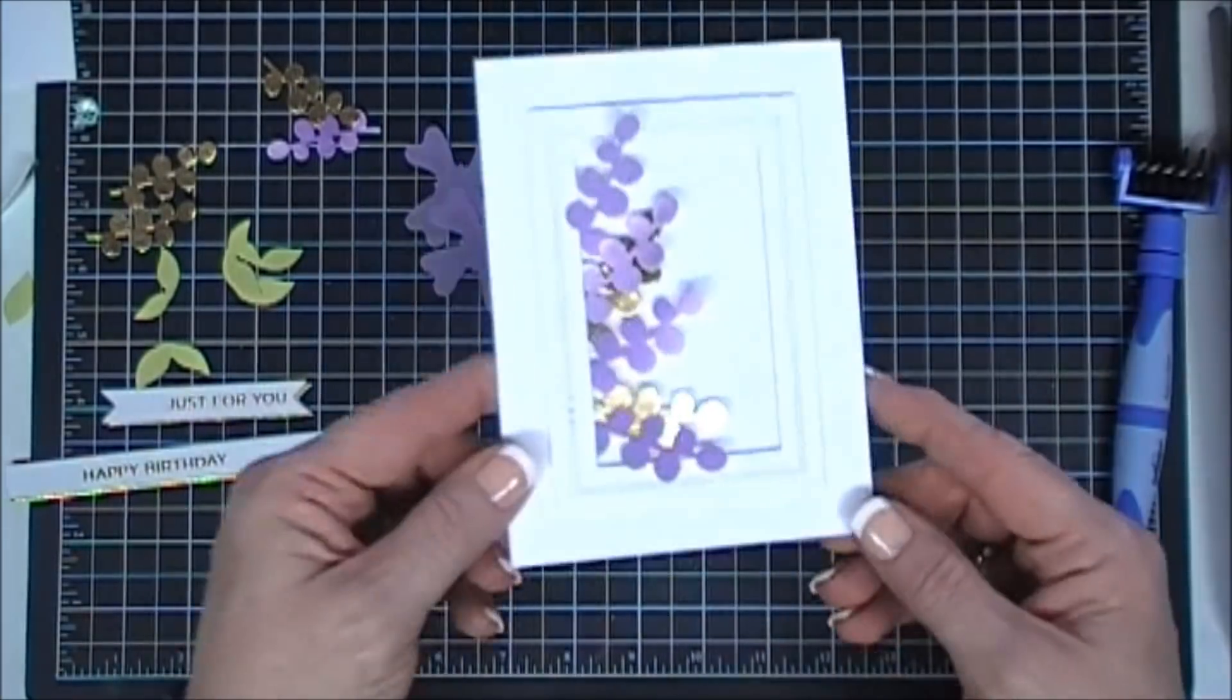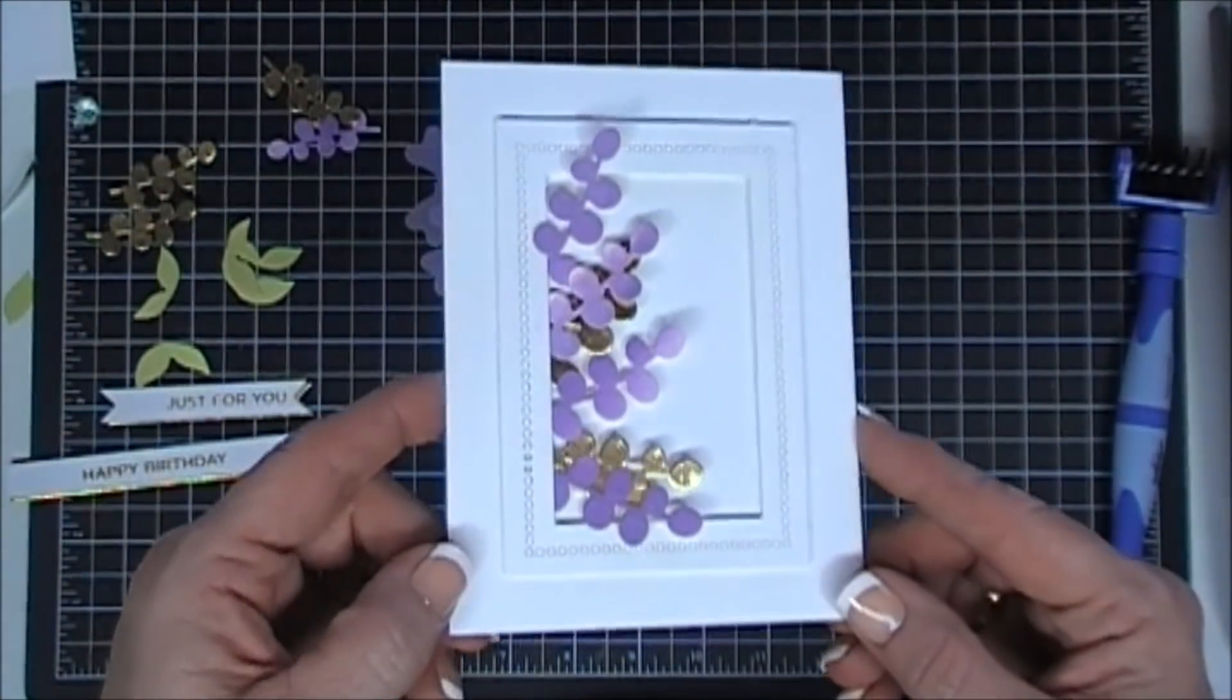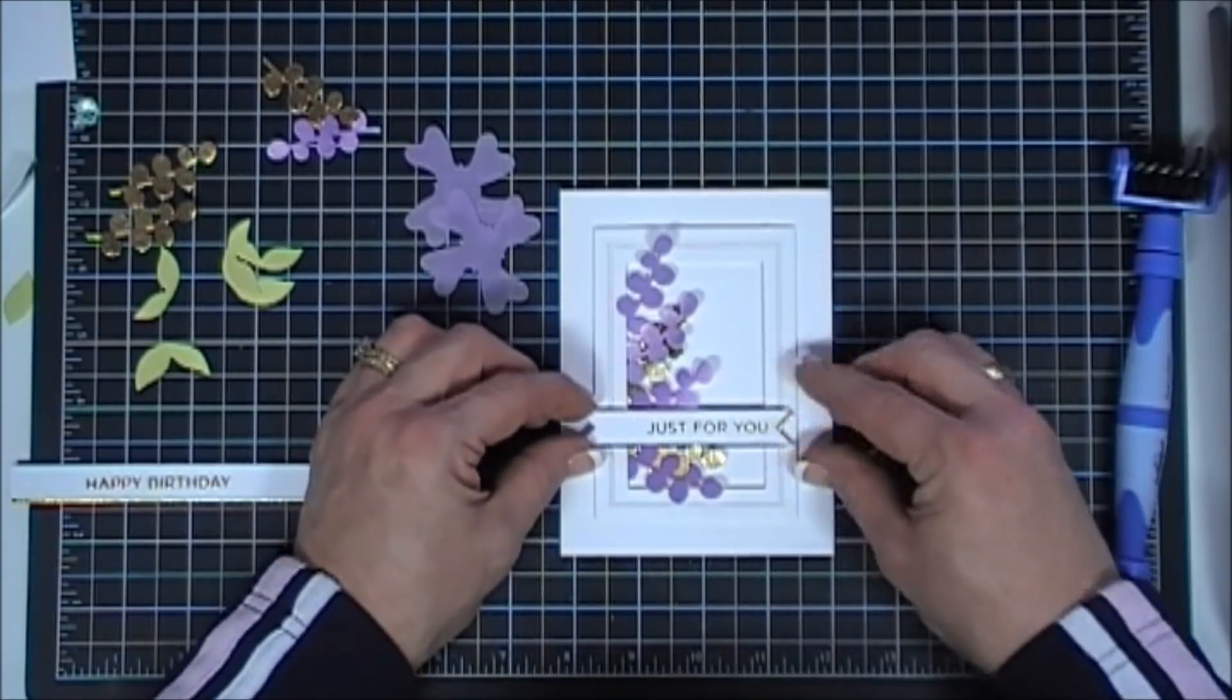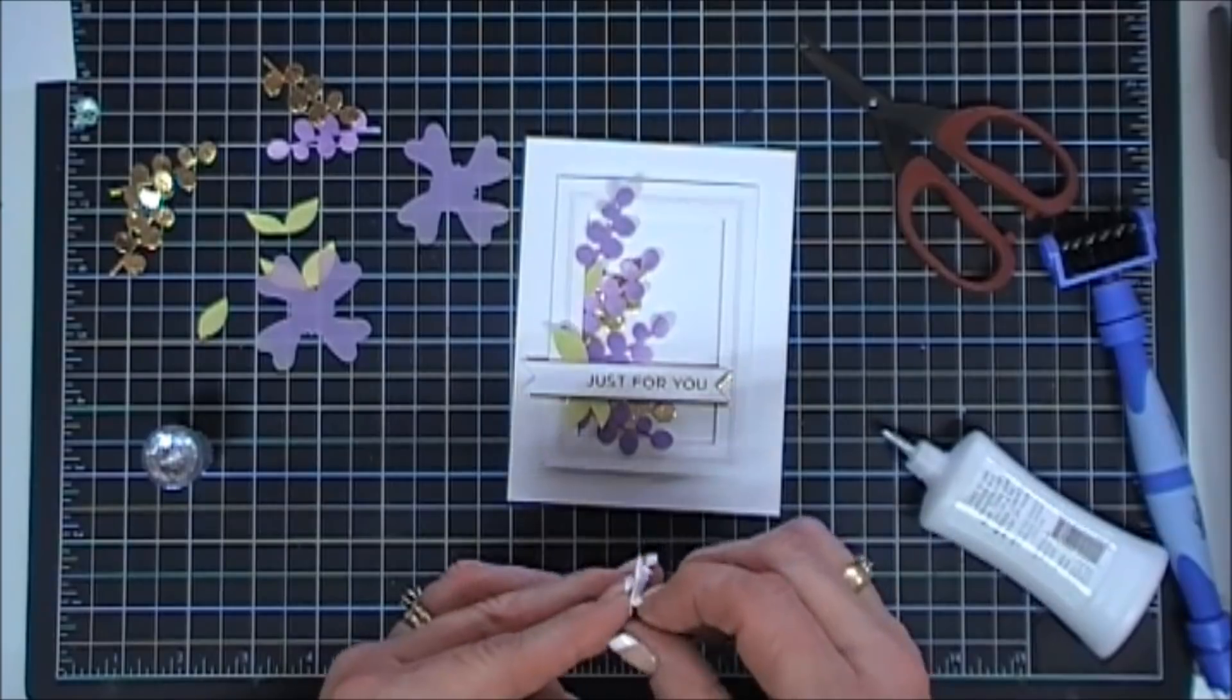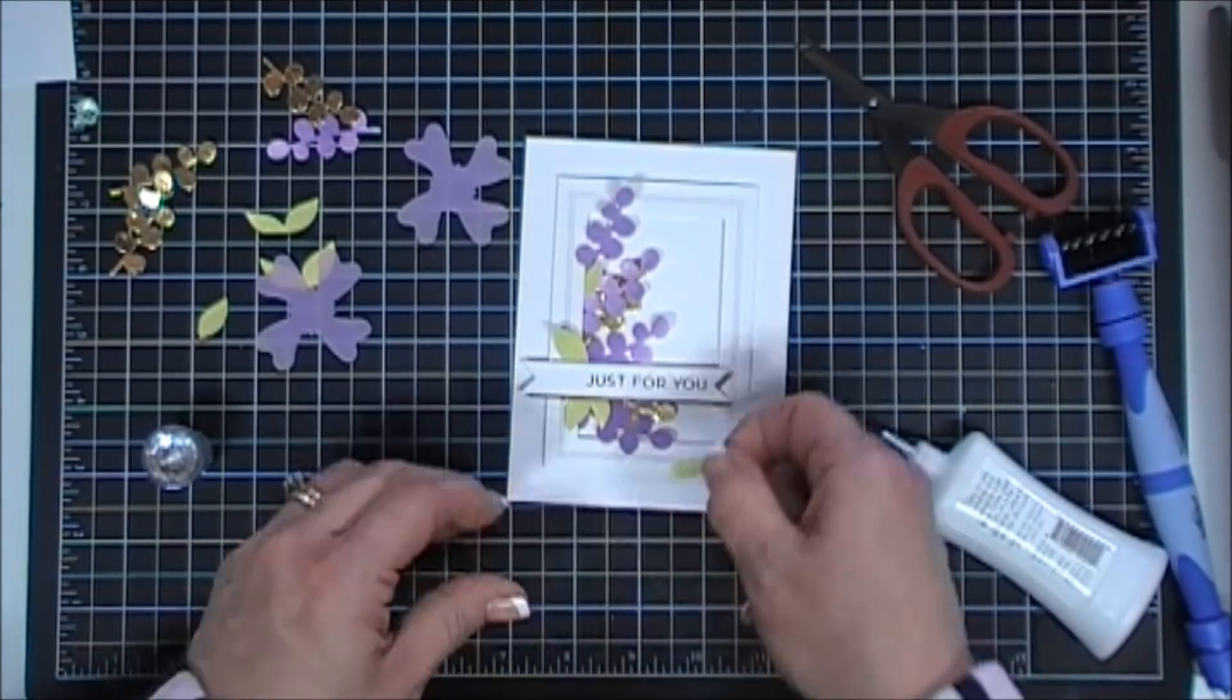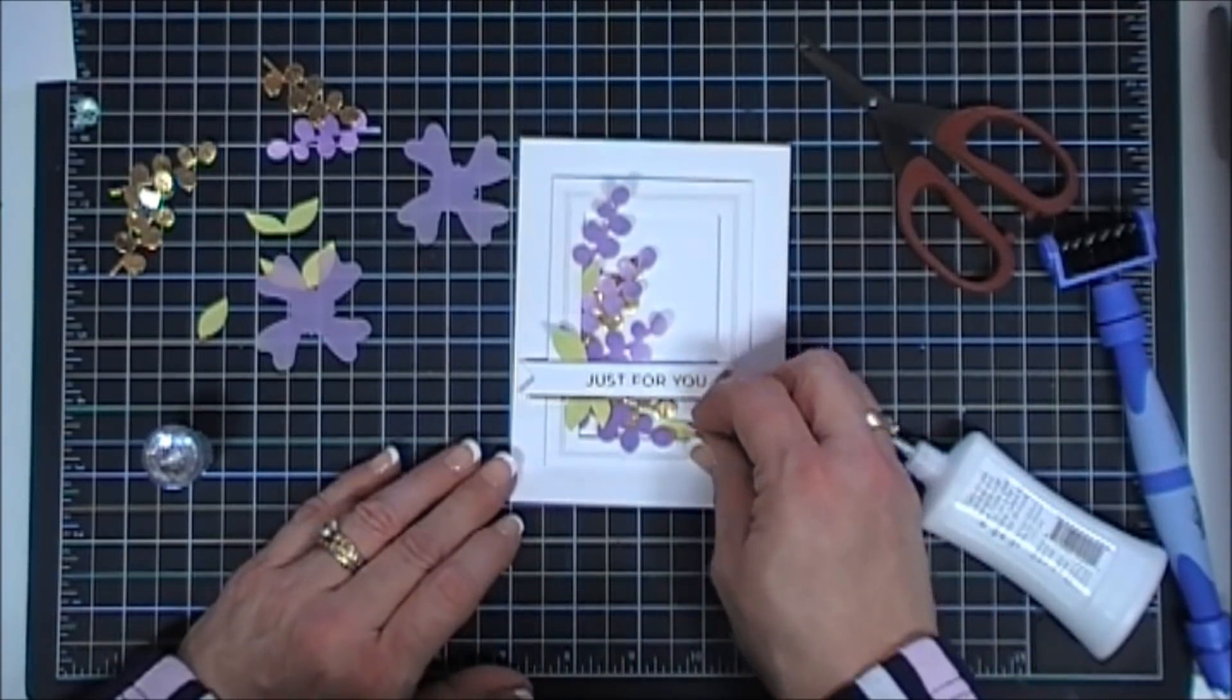Now we're going to add some foam tape behind our sentiment and then we'll just add a few of the green leaves, kind of doing a little tucking. I'm just adding them with my glue.